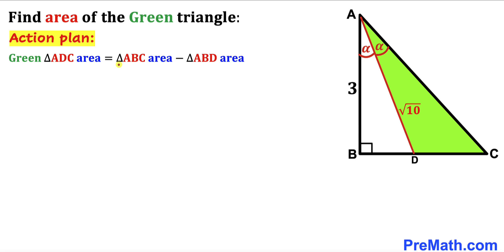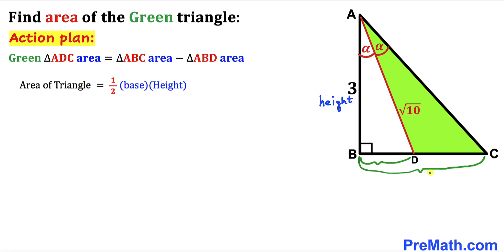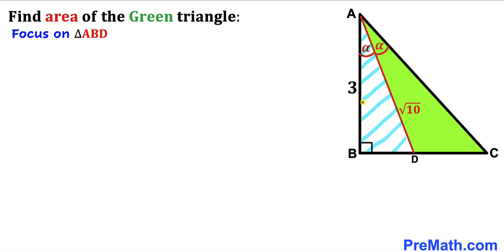So our task is to calculate the area of triangle ABC and the area of triangle ABD in order to find the area of the green shaded triangle. Recalling the area formula — area equals one-half times base times height — our height is 3, however the bases BD and BC are missing, so we need to calculate both BD and BC.